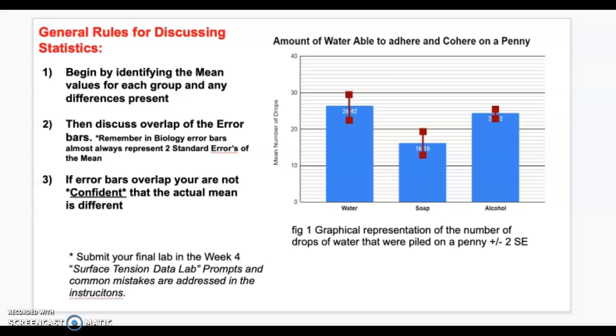So, we would say water and alcohol, the two standard error of the means shown for water and alcohol overlap. That's the vocabulary I would say the mean, the standard error bars overlap. And that means that we are not confident, we're not confident that the means are actually different. Or, put another way, we aren't sure if those means are the same or if they're different. We're just not confident.